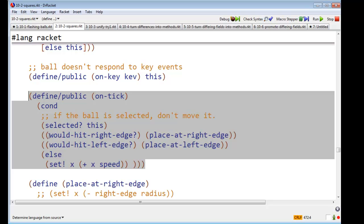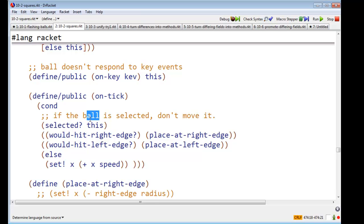Otherwise, if the ball would hit the right edge, place it at the right, excuse me, if the square. If the square is selected, don't move it. If the square is not selected, say, would it hit the right edge?